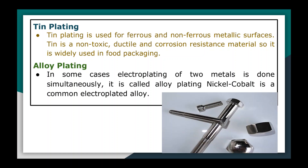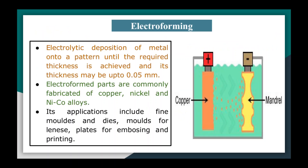Alloy plating is a process where plating of two metals is done simultaneously. An example is nickel-cobalt, which is a commonly electroplated alloy. This completes the discussion on electroplating.